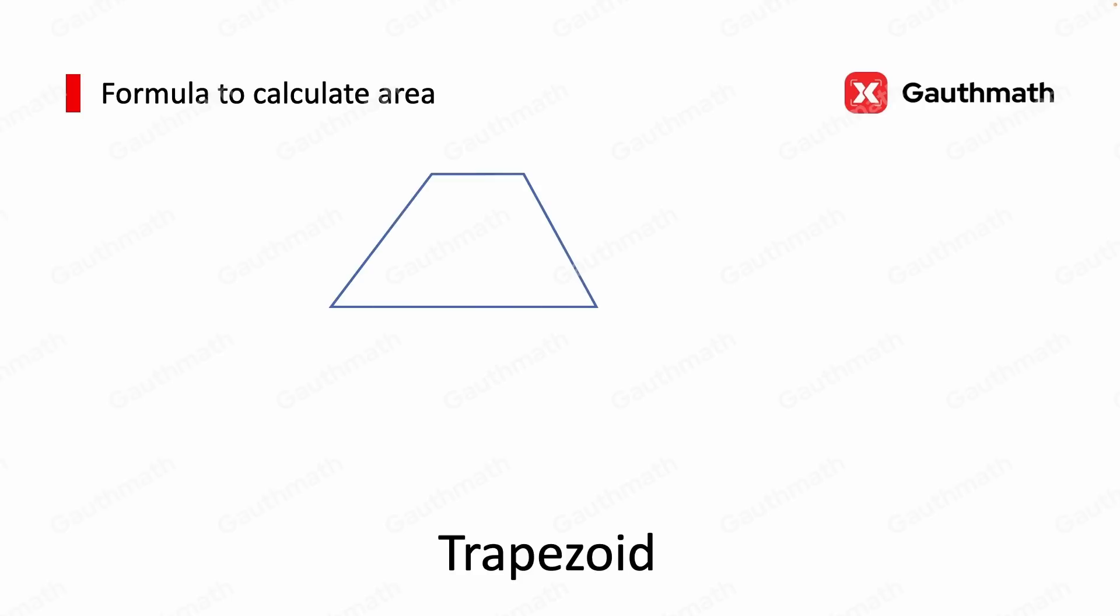The next is trapezoid. We can see it has two parallel sides, with the height as perpendicular to the parallel side. Let's turn it into something we know how to calculate, a parallelogram. Now the base of the new parallelogram is the top length A plus baseline B. And the height did not change. Because this parallelogram is formed by two original trapezoids, so the formula of trapezoid should be divided by two.